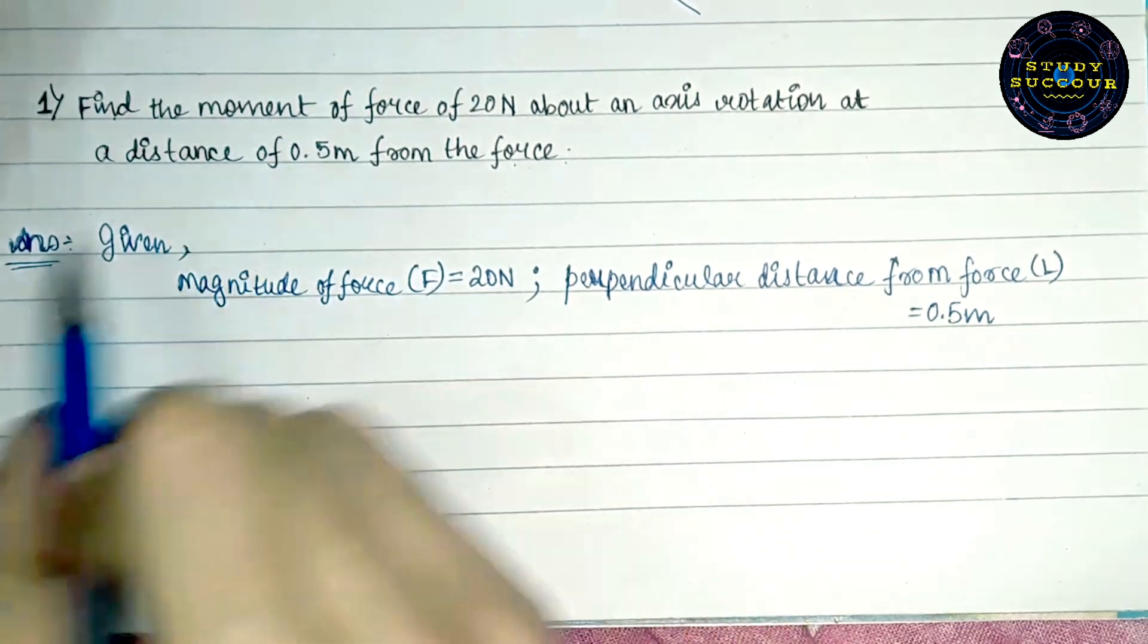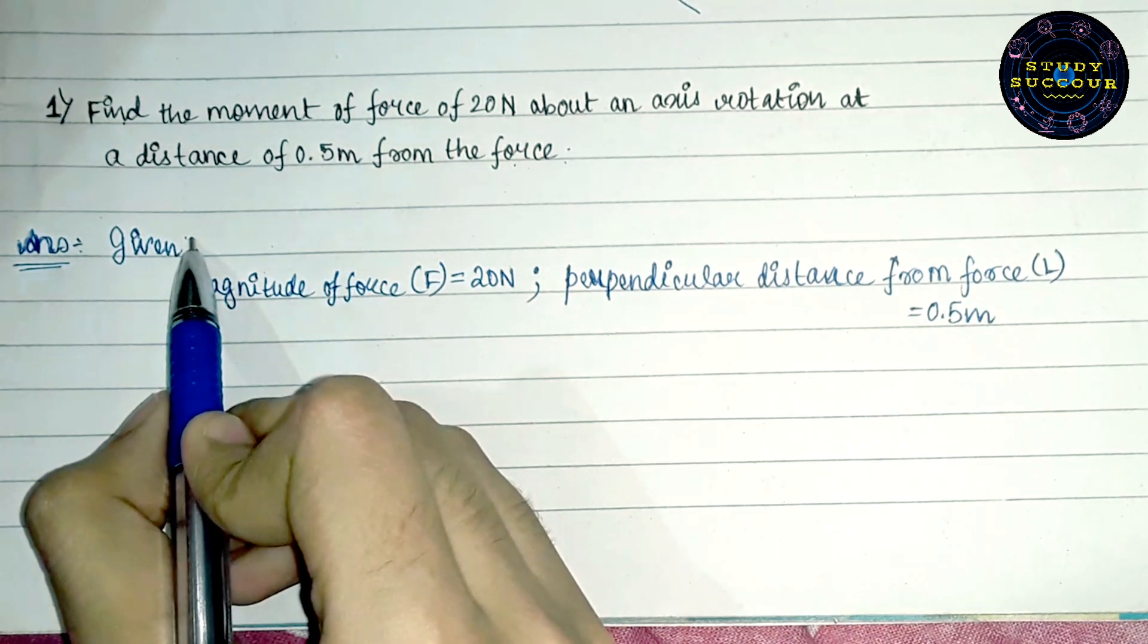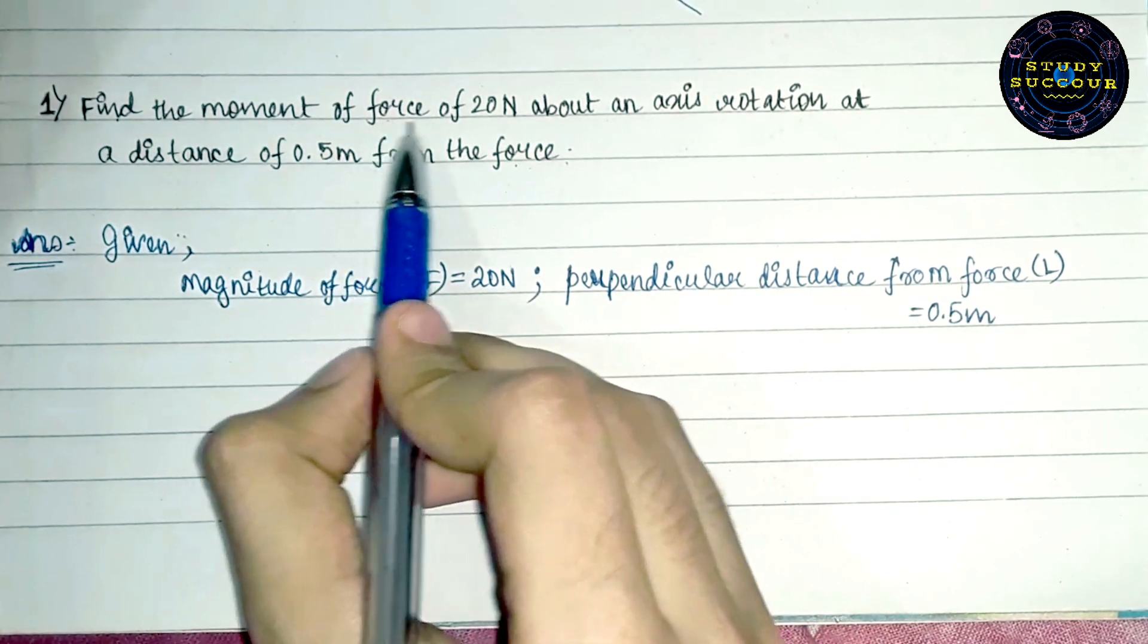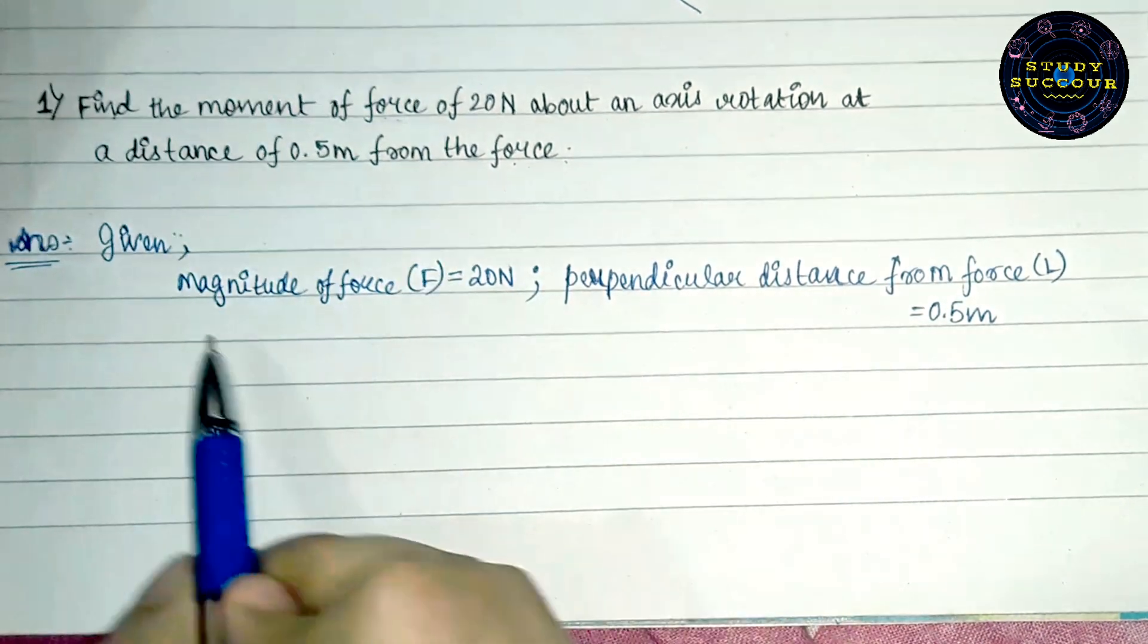So, let's move to the solution. First, we will find out what are the given parameters to us. Here we see that we are given force and a distance from the axis of rotation.